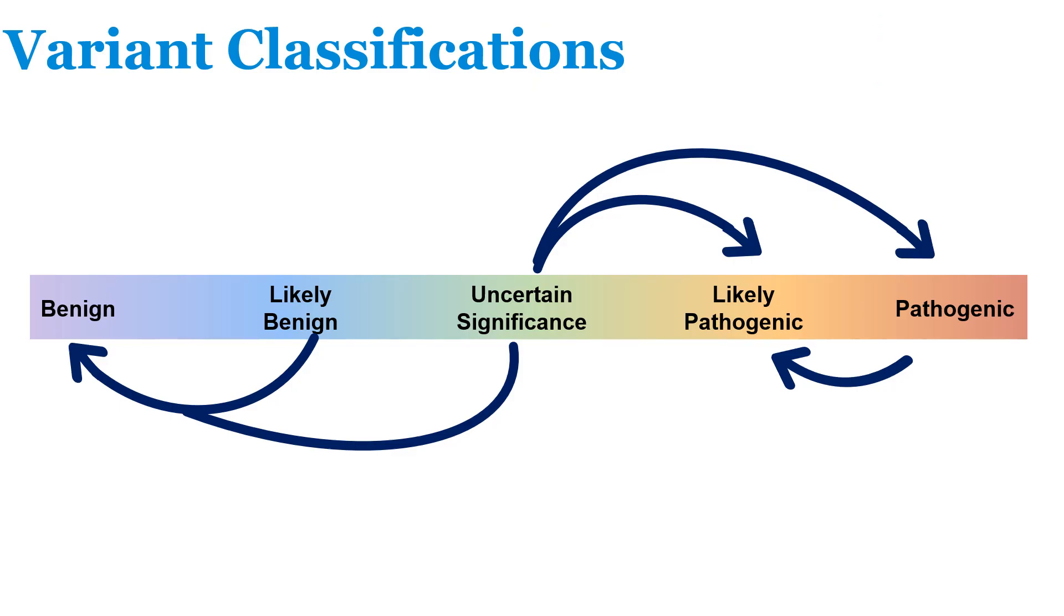More information about a gene or variant can inform a variant's classification. As we better understand the variant, its variant classification may change. For example, a VUS may shift to pathogenic or likely pathogenic, or to a benign or likely benign classification.